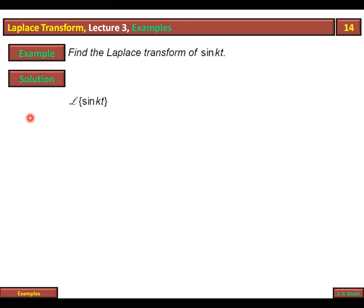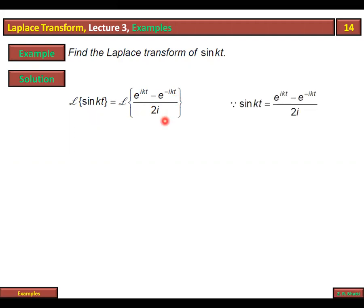One approach is: zero to infinity, e raised to minus st into sine kt — then we need integration by parts to do this. Alternatively, we take the formula of sine kt from trigonometry: sine kt equals (e^(ikt) minus e^(-ikt)) over 2i. This is the formula for sine kt.